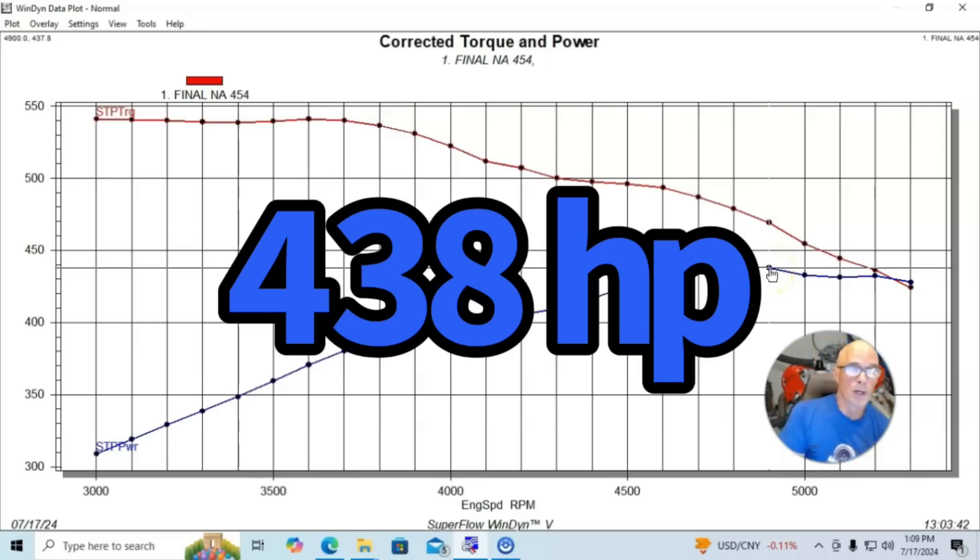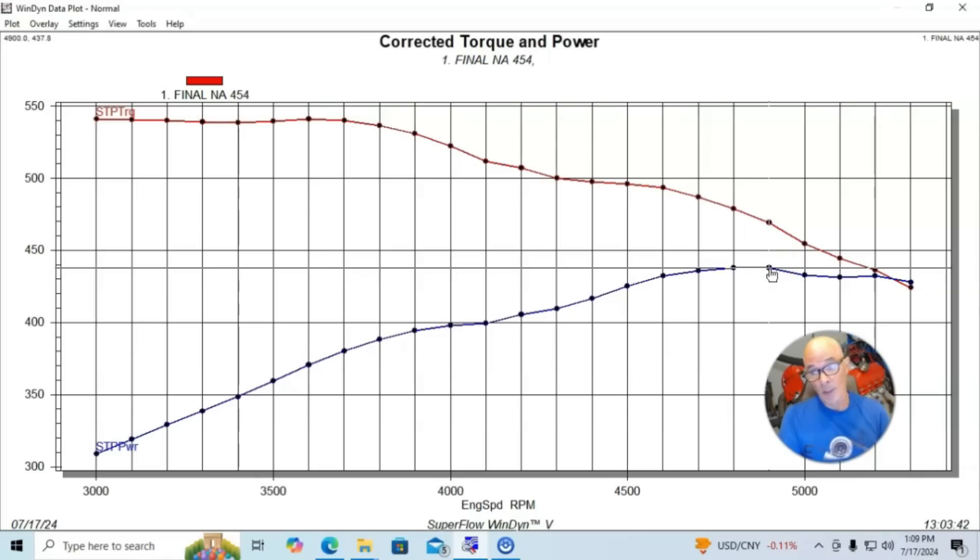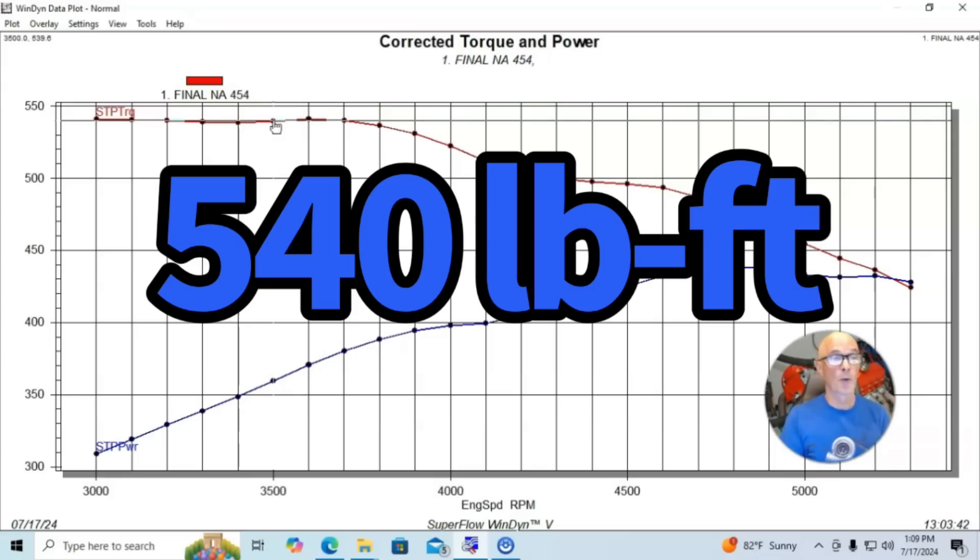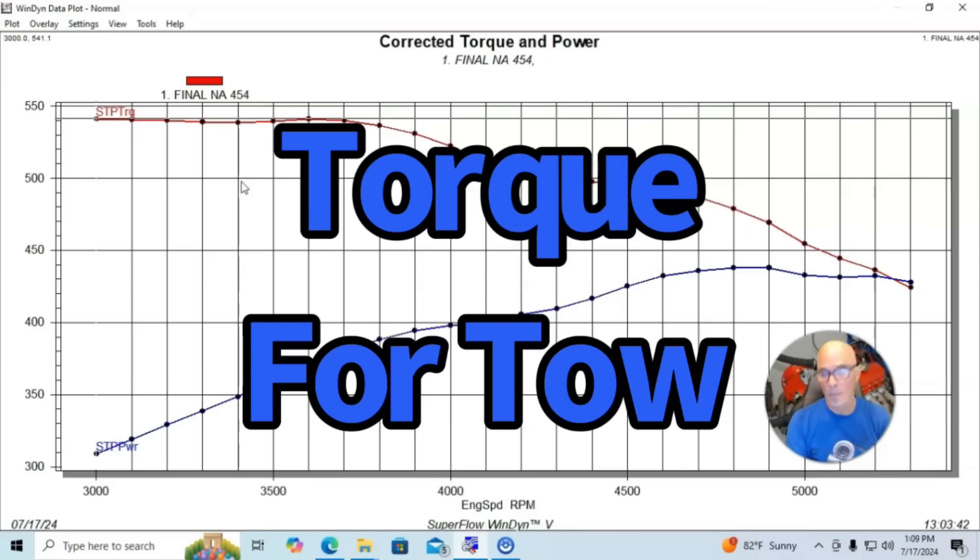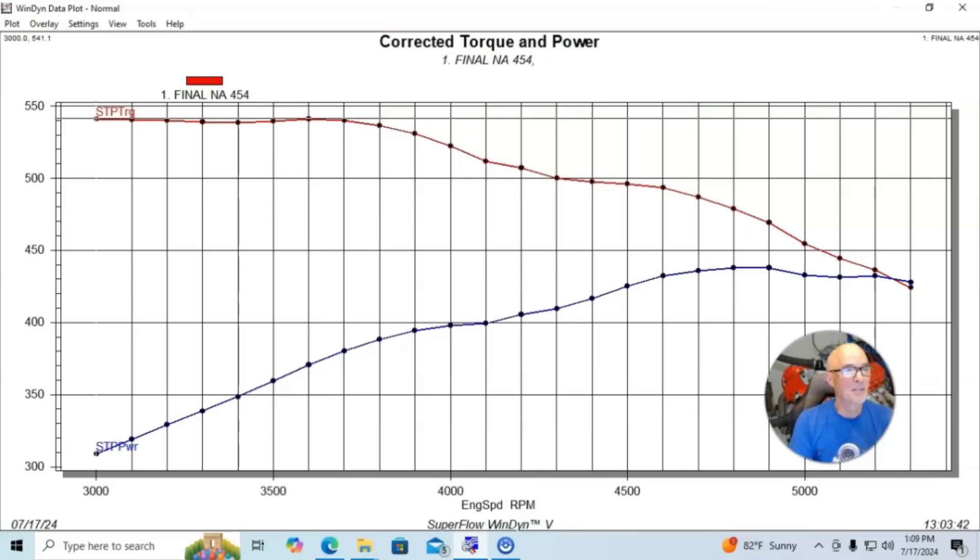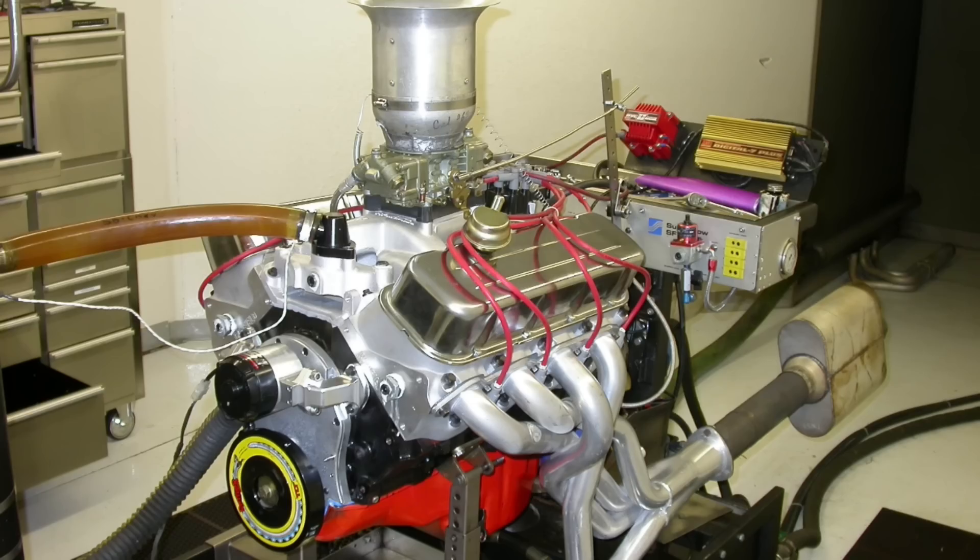I topped that off with a Performer 2.0 aluminum four-barrel intake manifold, and then a 750 Holley. We ran hooker supercomp headers that were inch and seven-eighths. This combination produced 438 horsepower, so really not even one horsepower per cubic inch. But on torque production, it did very well, 541 foot-pounds of torque.